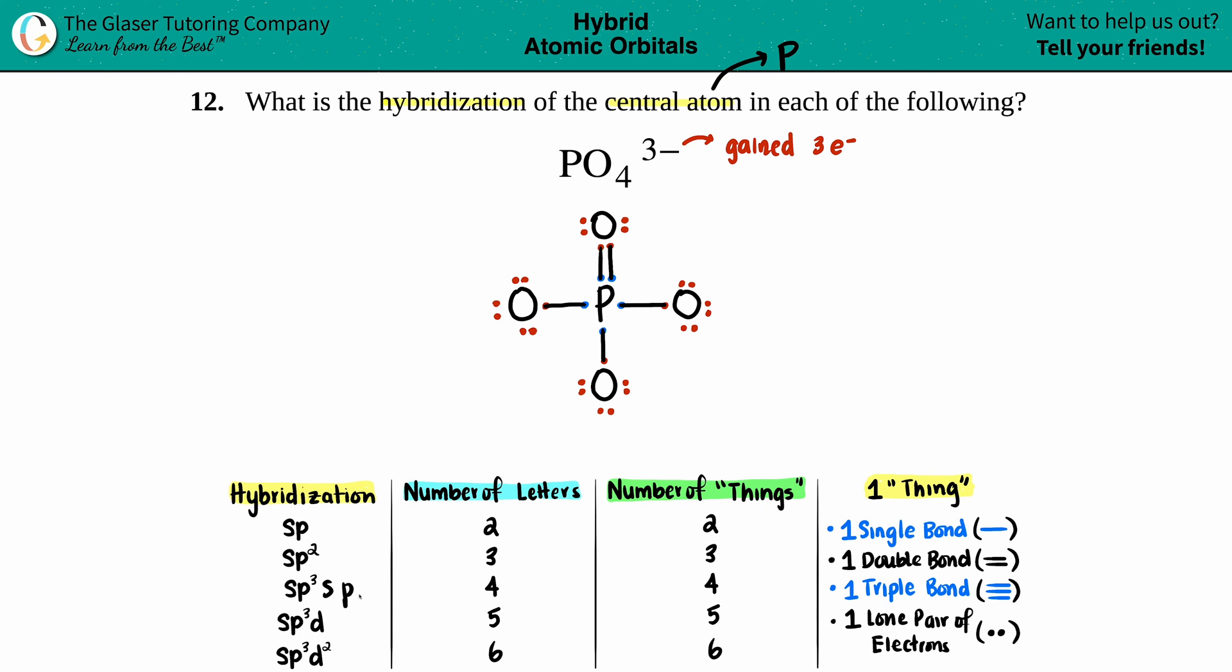And the number of letters always corresponds to the number of things. So if you have two letters, you got two things going on in the atom. If you got three letters, you got three things going on in the atom. But now the question is, what constitutes one thing?